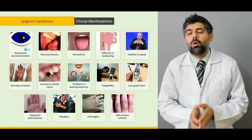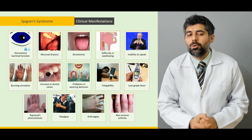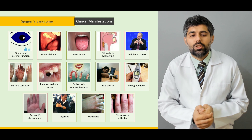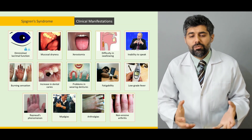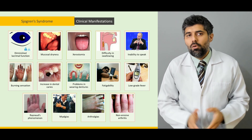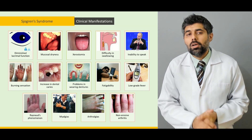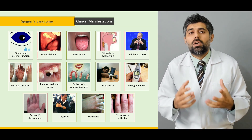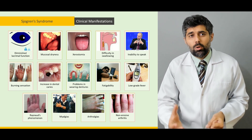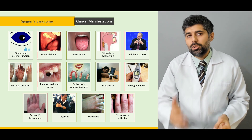Then we're going to learn about various clinical manifestations of the Chagrin Syndrome — from its lacrimal function to its salivary function, from xerostomia to dysphagia, even myalgia and arthralgias. We're going to learn why these clinical manifestations occur, how they occur, why they're important, which are common, which are uncommon, and why they are important further down in the process of both diagnosing and treating Chagrin Syndrome.